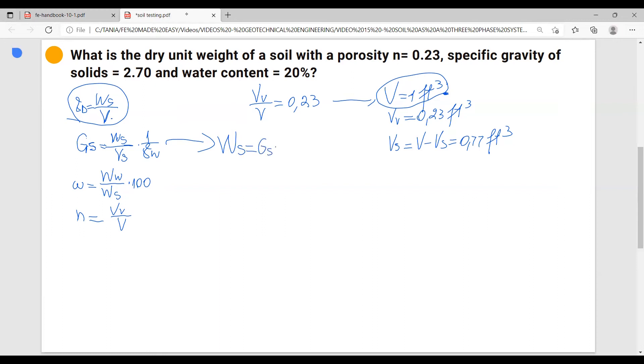Weight of solids equals to specific gravity of solids times volume of solids times gamma water.